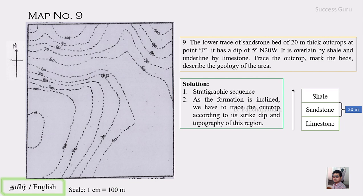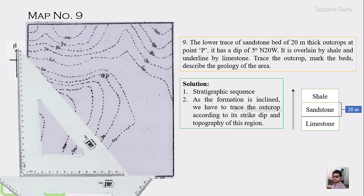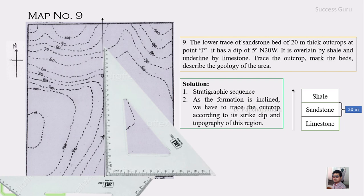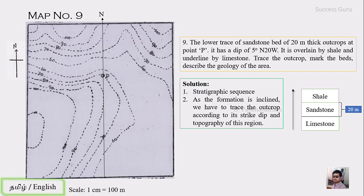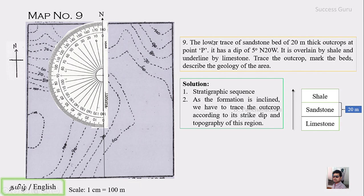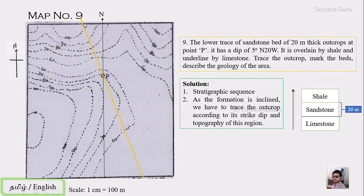Since this is an inclined formation, we trace the outcrop according to strike, dip, and topography. The first step is to mark the north orientation on the map as a reference line. The dip direction given is North 20 West, so starting from north and moving toward west: 0, 10, 20 — this gives us our North 20 West point.